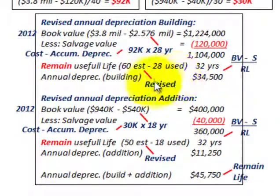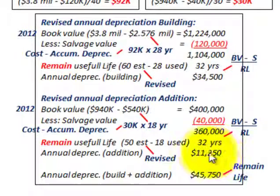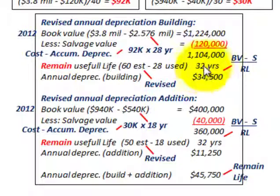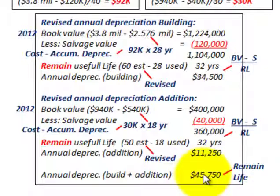That gives us $11,250 per year revised depreciation for the addition. So total annual depreciation for both the building and the addition is $34,500 plus $11,250, equaling $45,750 per year. Since both the building and addition have 32 years of remaining life, we can simply add the two revised annual depreciation amounts together for a combined figure over the remaining 32 years.